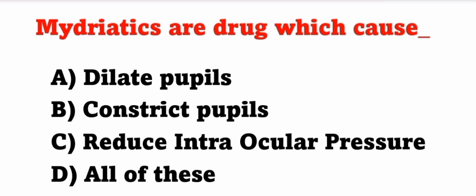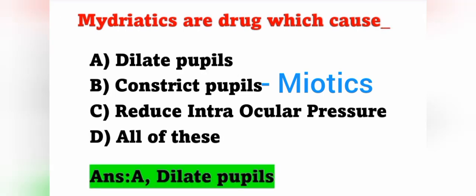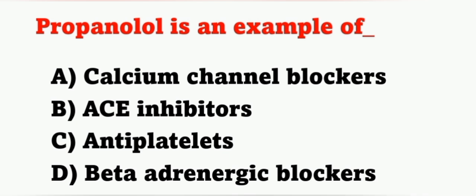The first question: mydriatics are the drugs which cause — option A: dilate pupils, option B: constrict pupils, option C: reduce intraocular pressure, option D: all of these. Mydriatics cause dilation of the pupils, so option A is correct. Another drug, myotics, cause contraction of the pupil — option B.